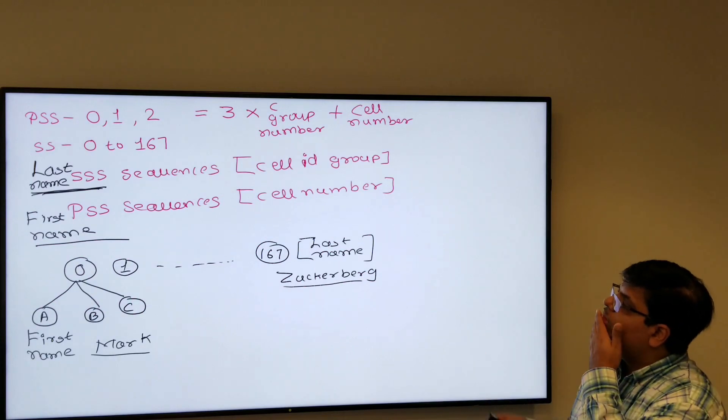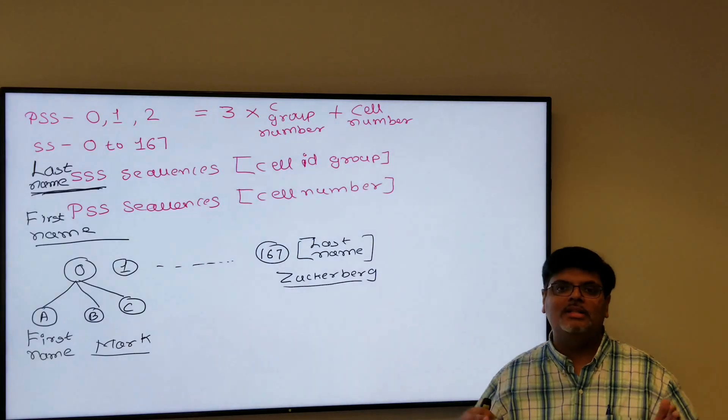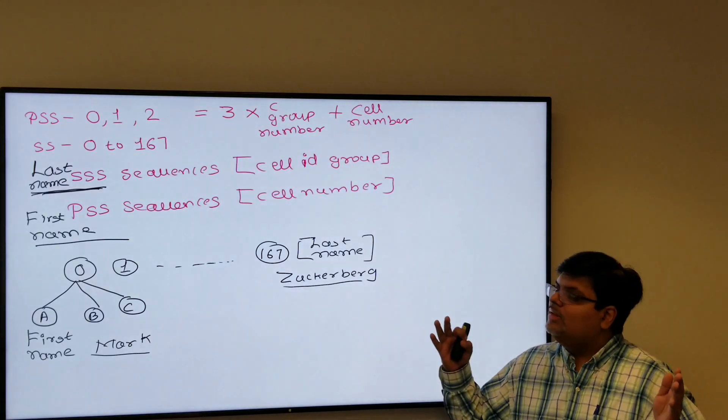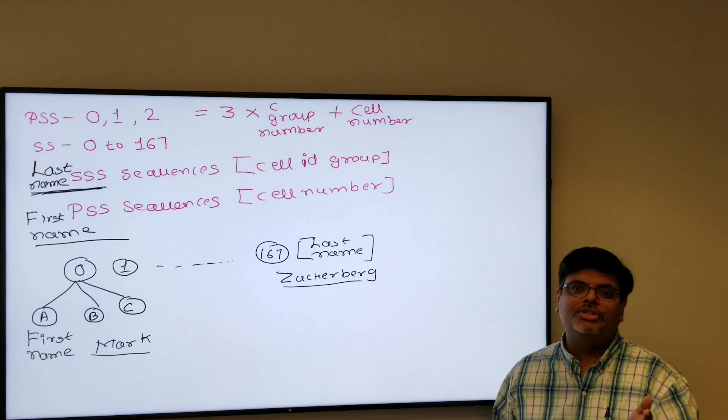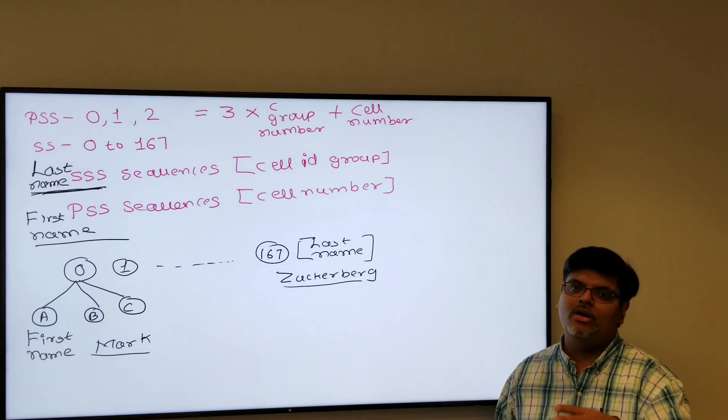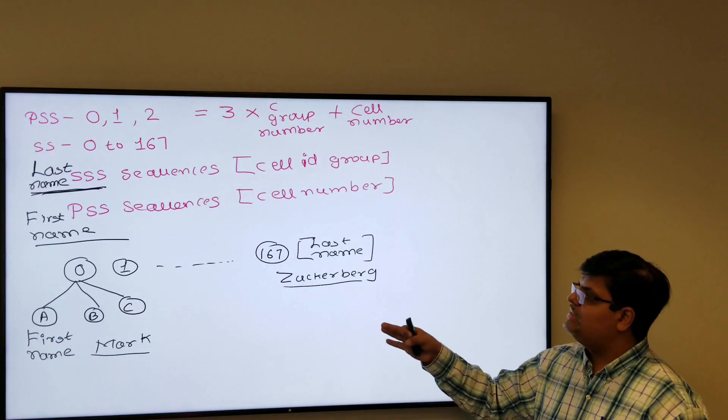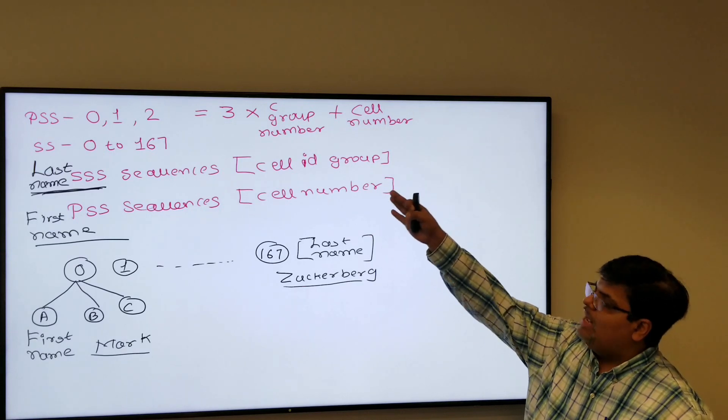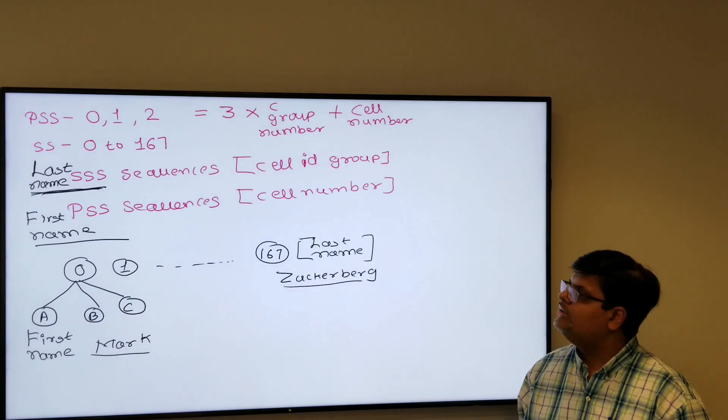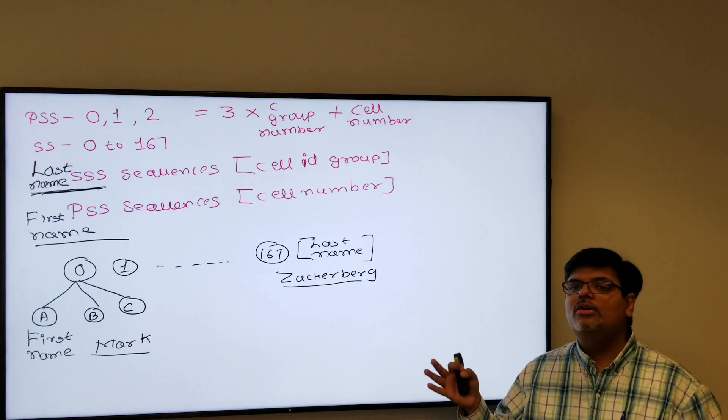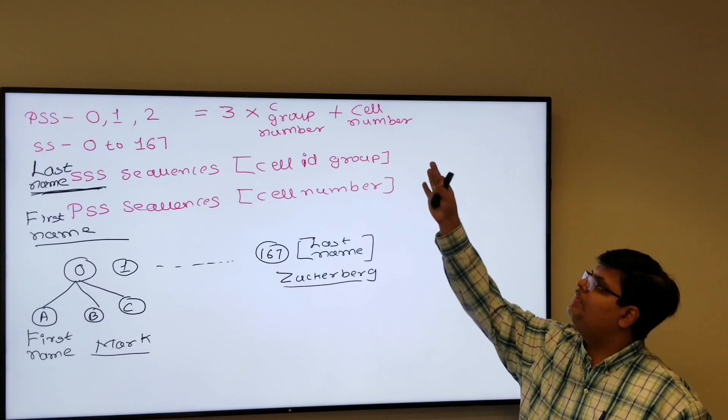In a way, the SSS is seen as the last name, like for example Zuckerberg. There are so many Zuckerbergs but the unique name is Mark, so Mark Zuckerberg. For example, you share the same last name with your brother, sister, or your parents, but your own name is unique to you. So it's like first name dot last name. Zero to 167 is your last name, the group number, and cell number is your three, any one of the three unique cell IDs: zero, one, two. As I said, it's total 504 unique PCI values, so zero, so 167 into three is 501 plus three is total 504. So every cell has a unique ID between zero to 504.